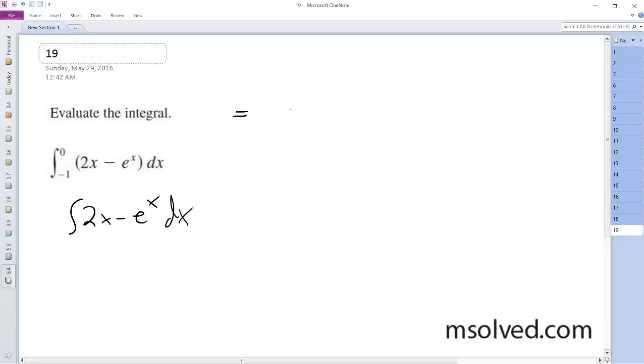So what we end up with is x squared minus e to the x from negative 1 to 0.